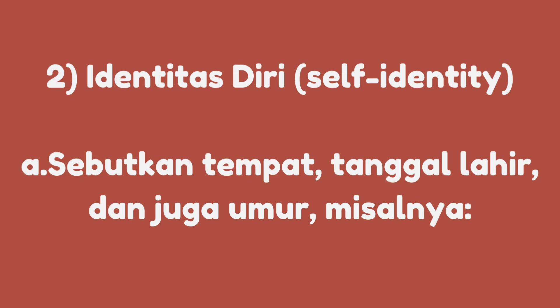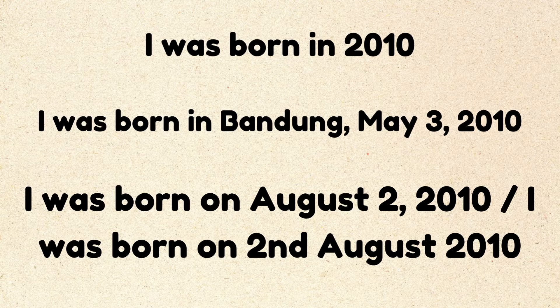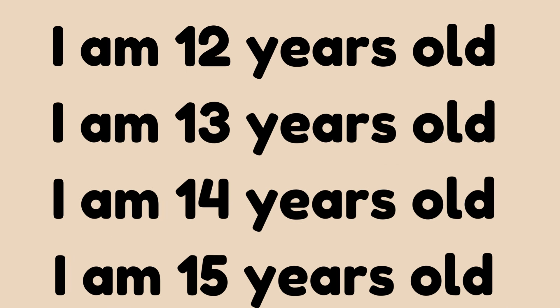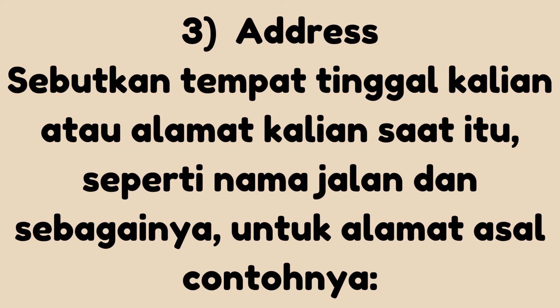Identitas diri: Sebutkan tempat, tanggal lahir, dan juga umur. Misalnya: I was born in 2010. I was born in Bandung, May 3, 2010. I was born on August 2, 2010. Sebutkan umur kalian: I am 12 years old. I am 13 years old. I am 14 years old. I am 15 years old.